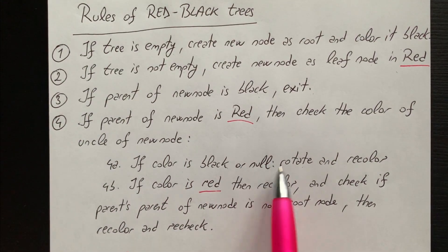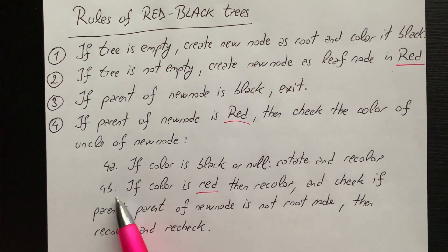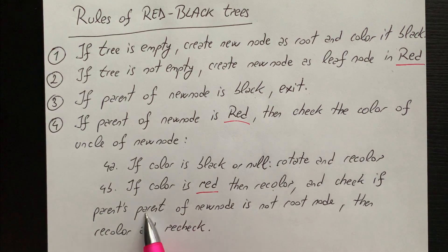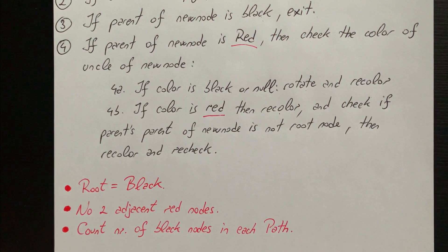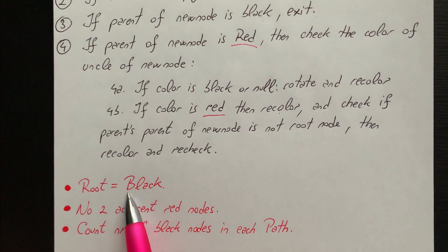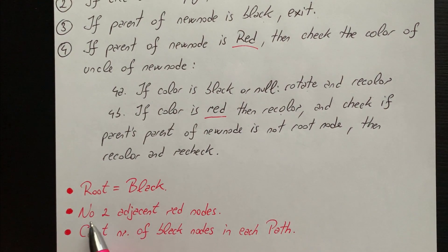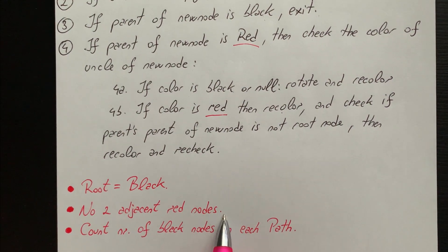And here we have two options: the first one, if color is black or null, rotate and recolor. And b, if color is red then recolor and check if parent's parent of new node is not root node, then recolor and recheck. We always need to keep in mind also the following rules: the root always has to be black, there should not be two adjacent red nodes, and the count of number of black nodes in each path should be the same.